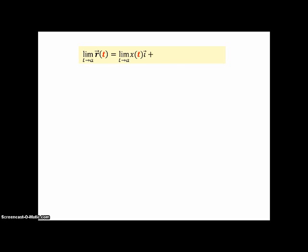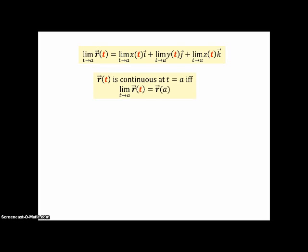As far as limits go, these are easy because the definition is just to take the limit of the different components, and those will be real-valued functions that you already know how to handle. The definition of continuity is similar: you have continuity at t = a if and only if the limit of the vector-valued function is the same as the vector-valued function evaluated at a.